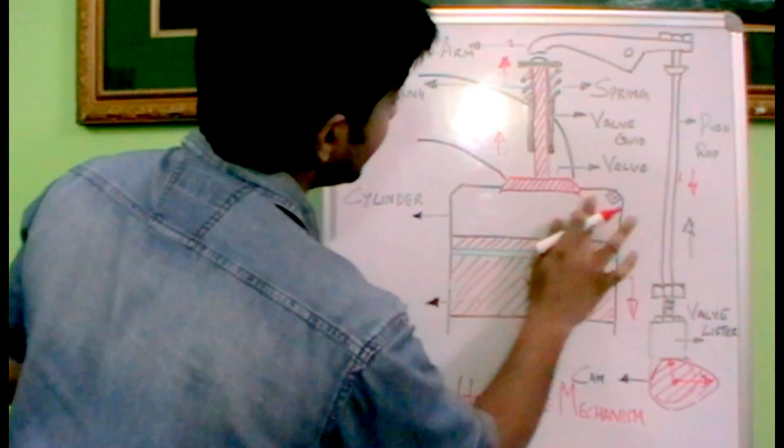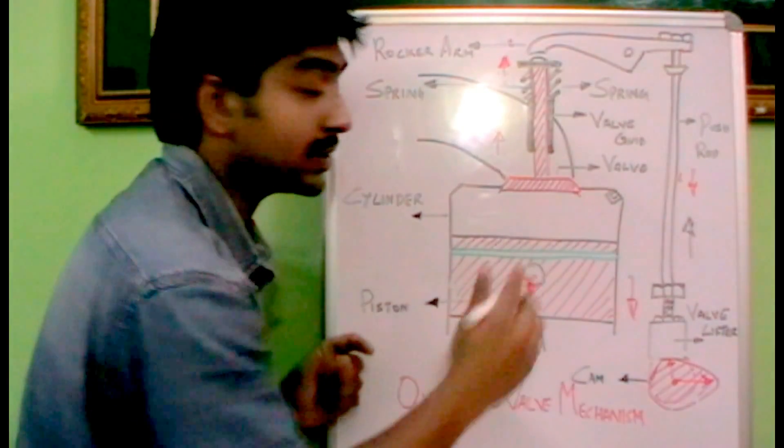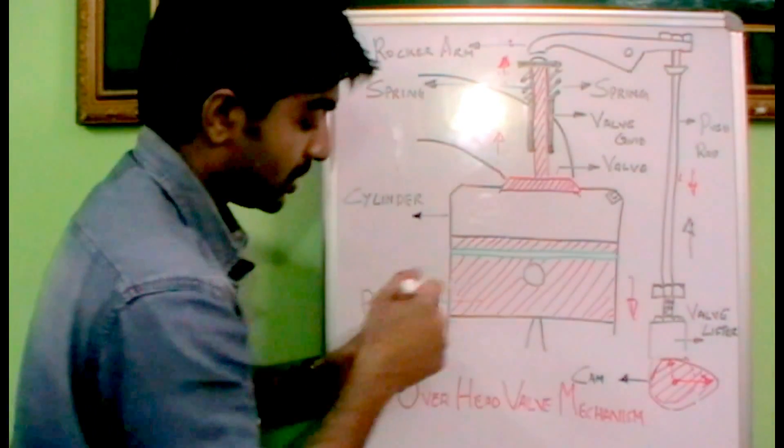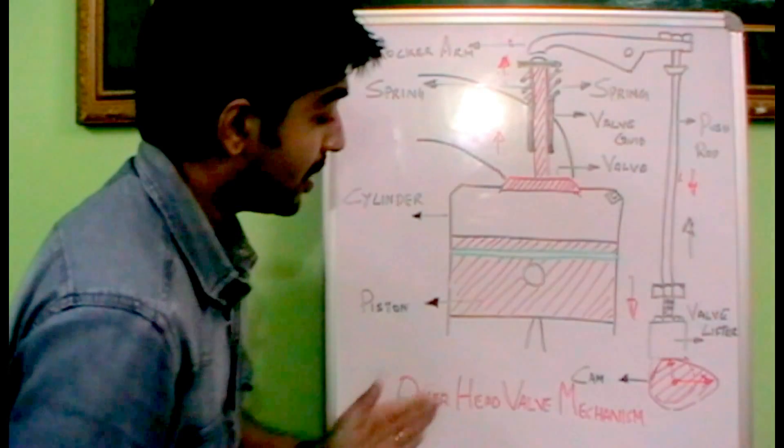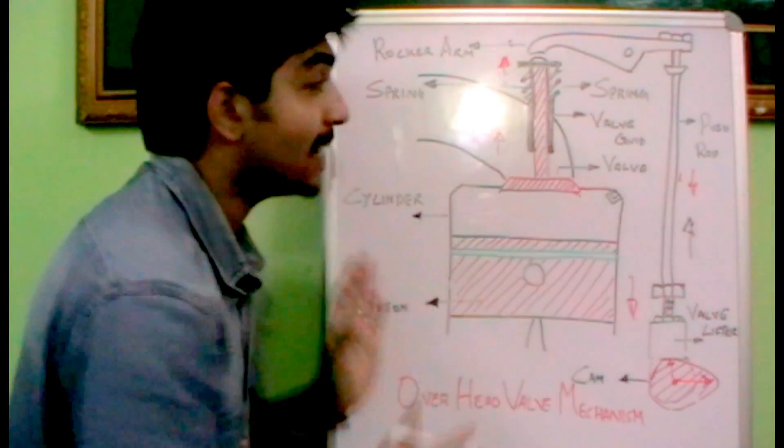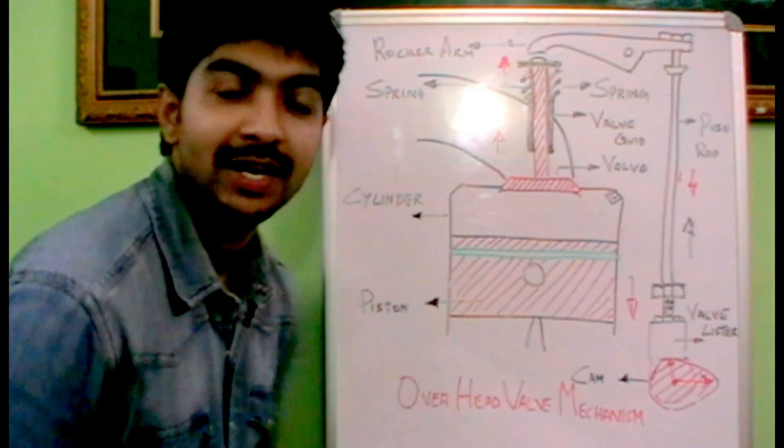So the valve moves up normally. And it will close the opening towards the cylinder. So that's normally how an overhead valve mechanism works. And I hope you understand it. Thank you.